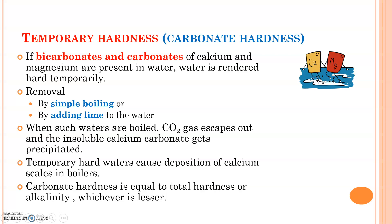It is important that when we use water in industry, we first have to convert hard water to soft water, or we should always prefer soft water in industries. Total hardness equals carbonate hardness plus non-carbonate hardness.